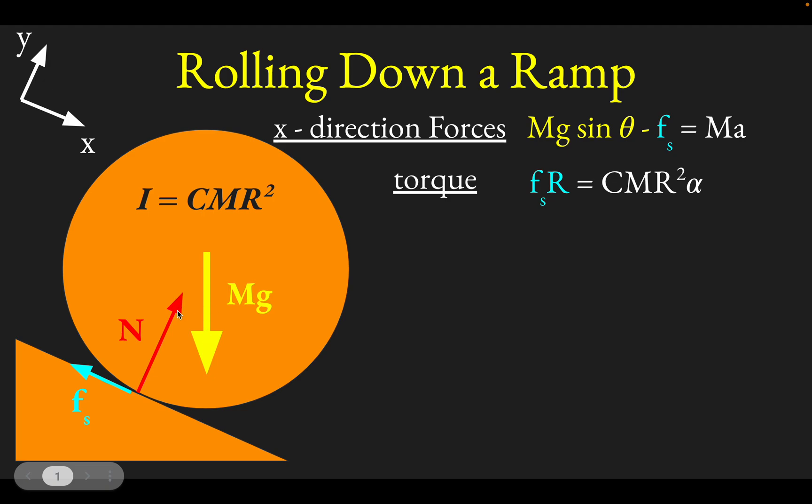So there's going to be no torque provided by normal force or Mg. But there will be a torque provided by friction, which causes this rotation. And so the torque is force times distance, friction force times distance from axis, which would just be the radius. And then that equals moment of inertia times angular acceleration.